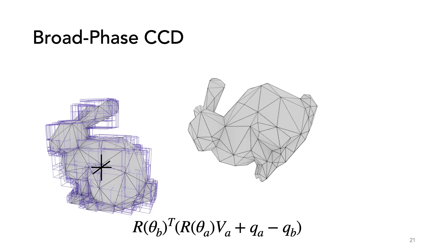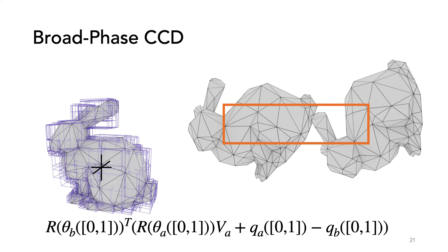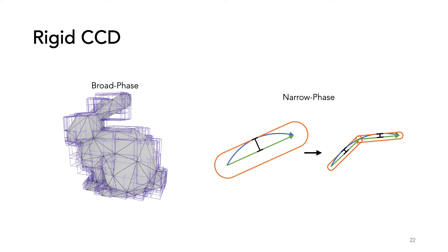But in CCD, our variables are time dependent. This means a bounding box around a triangle is swept through time. To compute these bounding boxes, we use interval arithmetic, and more information on this can be found in the paper. With the list of candidates in hand, we can now determine if they are collisions in our narrow phase.